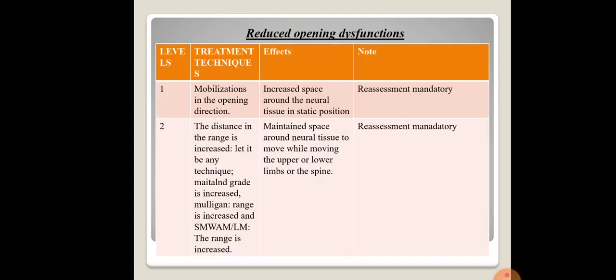Coming to reduced opening dysfunction — levels of treatment. Level one: the treatment technique used is mobilizations in the opening direction, whether Maitland, Mulligan, or any other. If choosing Maitland mobilization, target grades one and two only. Do not touch grade three in the starting position. For Mulligan, perform only in the initial range, as Mulligan is a movement with mobilization technique and is dynamic — best reserved for dynamic, not static mobilization.